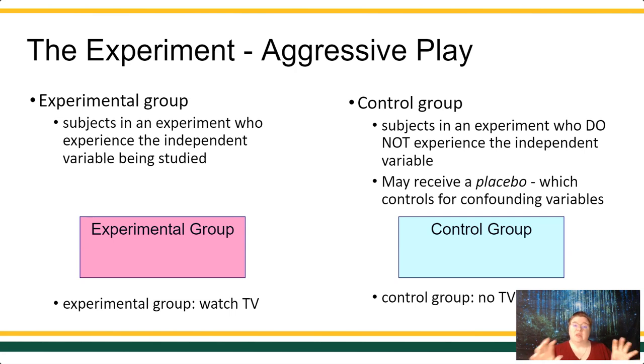If there's a difference between the groups, we know that the only thing that was different between them, fingers crossed if you had very good experimental design, the only thing that was different between them was the experimental variable. So we compare the experimental group to the control group, and any difference between those groups is presumed to be a function of the independent variable. So this is how a lot of mainstream psychological studies are conducted.